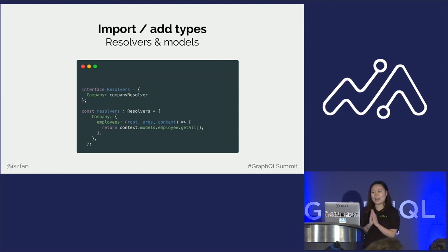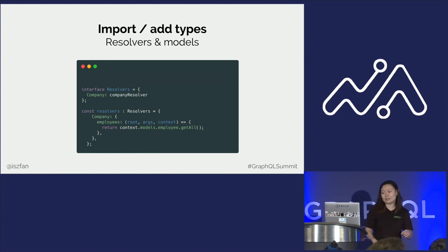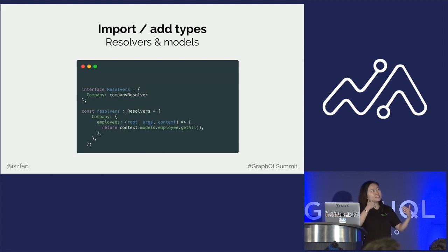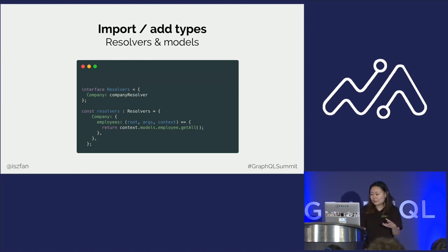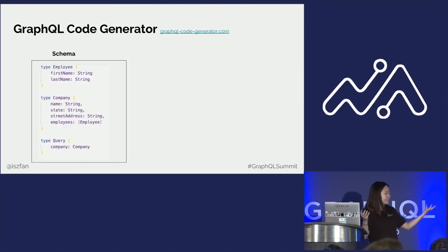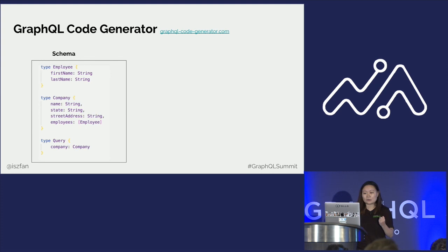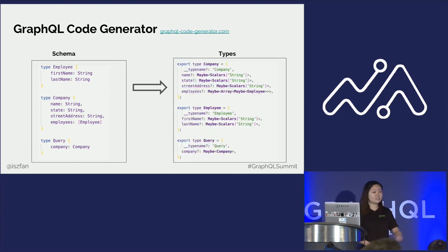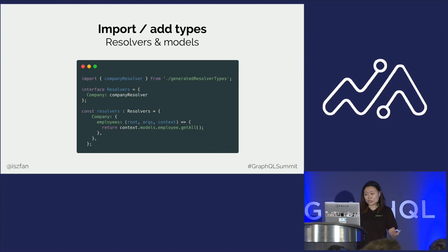We also want to add types to the actual files we're refactoring. Here's an example of a resolver file — the company query is returning a list of employees for the employees field. You'd think about the type definition being a list of objects in the same shape as the employees type. Remember that GraphQL is a typed language, so we already have that defined in our schema. There's a great tool called GraphQL Code Generator: you feed it your schema file, and it generates types you can import directly in your TypeScript file. Coming back to the resolver, all you need to do is import the resolver type from the generated types. Then make sure your server starts up and your tests pass.